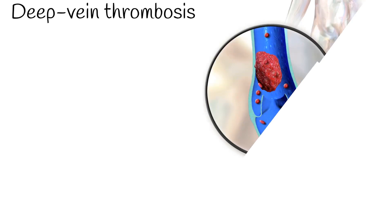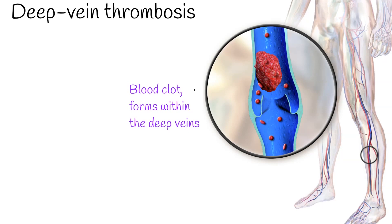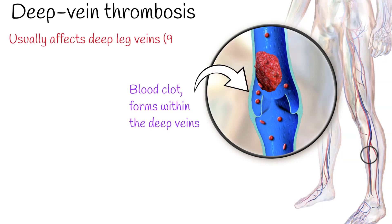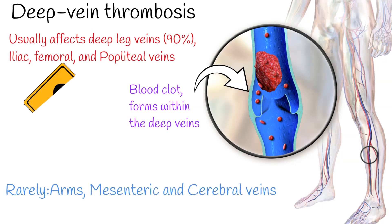A deep vein thrombosis is a blood clot that forms within the deep veins, usually of the leg. Rarely, it can occur in the veins of the arms, mesenteric and cerebral veins.